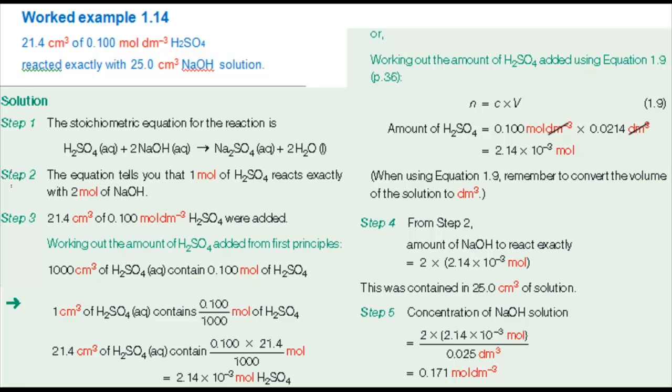Worked example 1.14 illustrates the steps in a typical acid-base titration. In this example, a standard solution of sulfuric acid is used to find the concentration of a solution of sodium hydroxide. There are five steps set out in the strategy that you can adapt for any titration calculation. Let's work through them for the above titration.